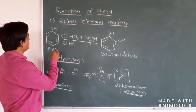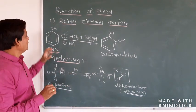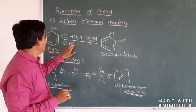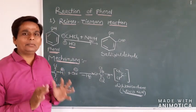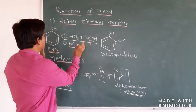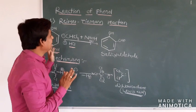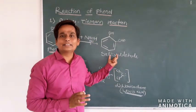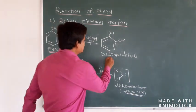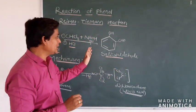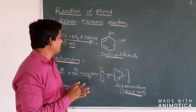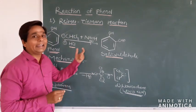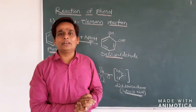In Reimer-Tiemann reactions, you have to use phenol. Phenol reacts with chloroform plus NaOH and it undergoes the reaction. In JEE and NEET exam, directly they give the question like this and ask: what is the product? We will get salicylaldehyde. They also ask which intermediates we will get during the mechanism of the Reimer-Tiemann reaction.